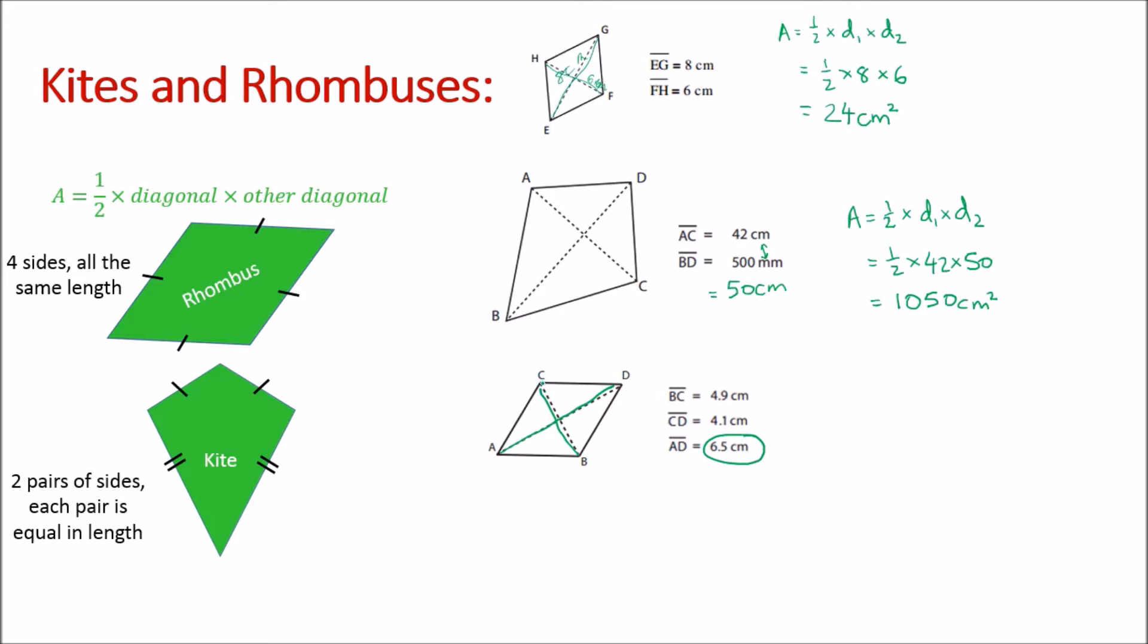So we definitely do want BC. What's this other distance that you've been given, CD? That is a side length. We're not interested in the side length when we're calculating the area of a kite or a rhombus - we're interested in the diagonals.